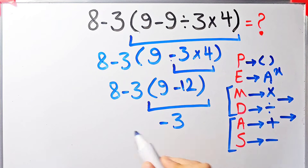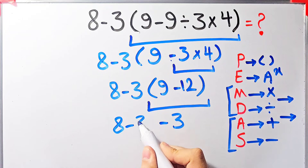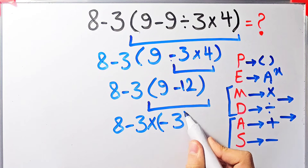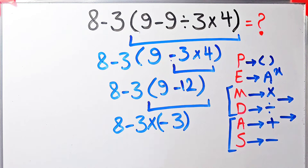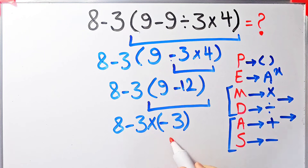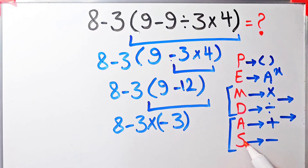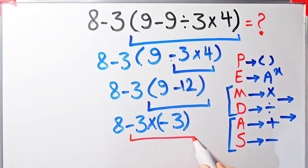We simplify the parenthesis: 9 minus 12 equals negative 3. Now we have 8 minus 3 times negative 3. We have multiplication and subtraction, so first we simplify the multiplication because it has higher priority. Negative 3 times negative 3 equals 9. Now we have 8 plus 9.